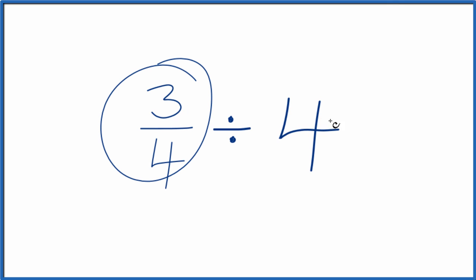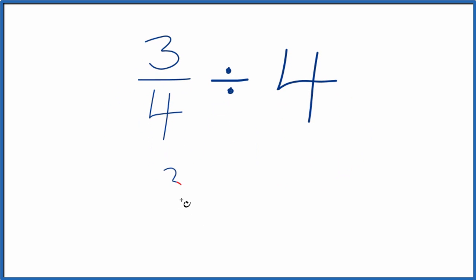Let's divide the fraction three-fourths by four. And here's how we'll do it. We'll take three-fourths like this, and instead of division, we're going to multiply by the reciprocal of four.